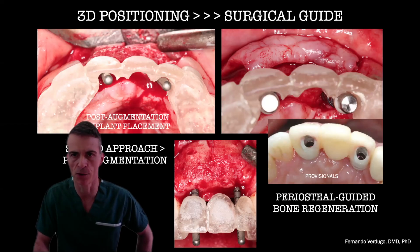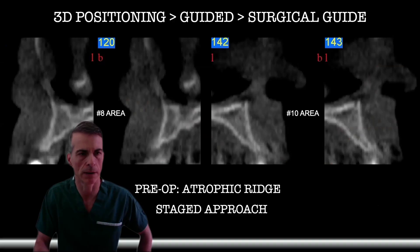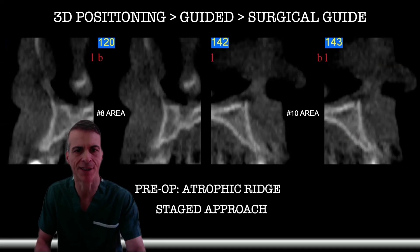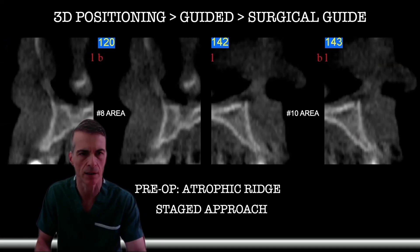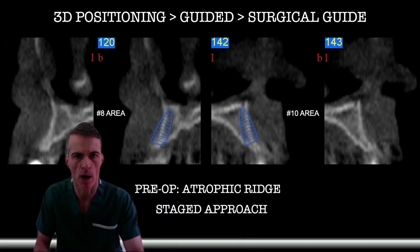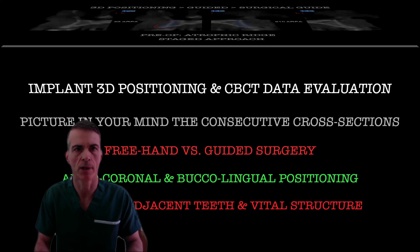That surgical guide, developed based on the wax-up, will also allow the restorative dentist to create screw-retained provisionals to guide the tissues further for better aesthetics. When we see staged cases of atrophic ridges that need pre-augmentation prior to implant placement, 3D positioning is key and the surgical guide is key. It will allow us to identify the sites that need to be augmented for future implant placement, and you will be able to use that guide twice — during augmentation and later after implant placement.